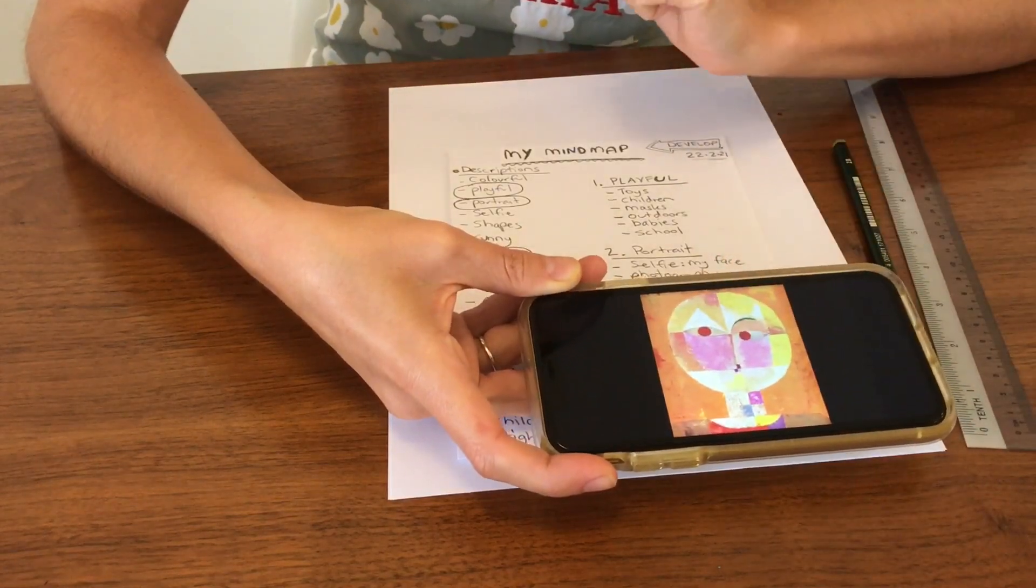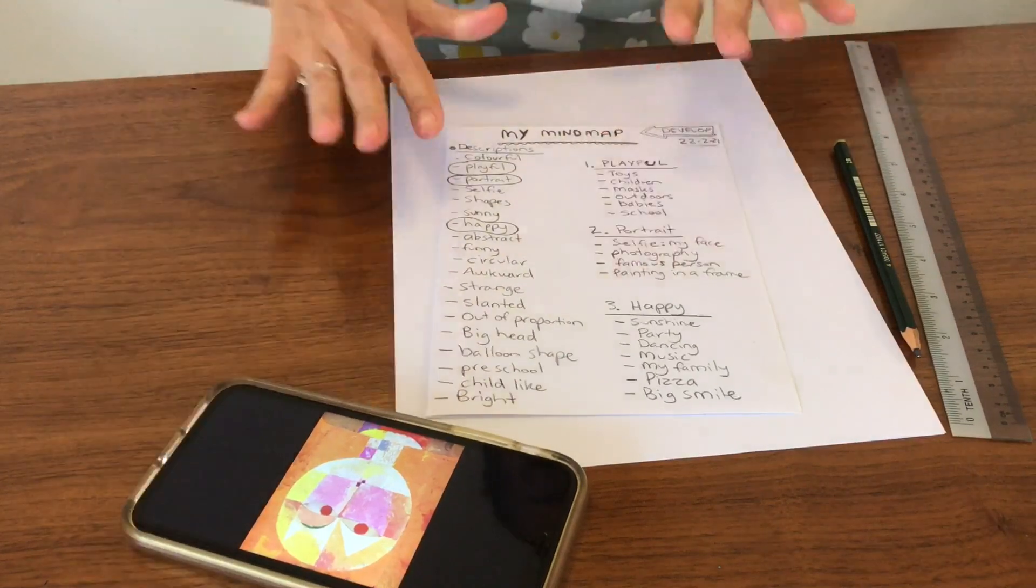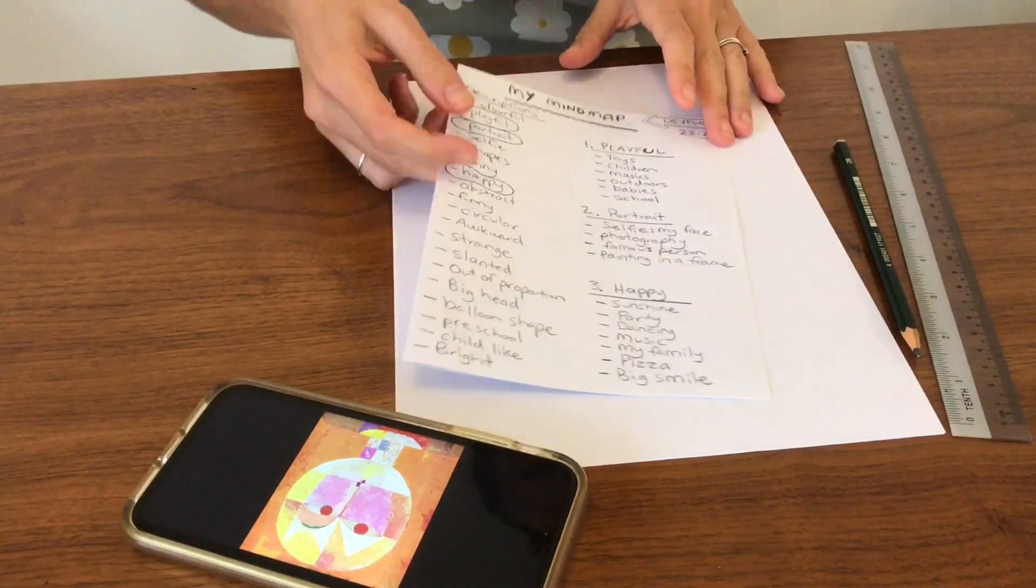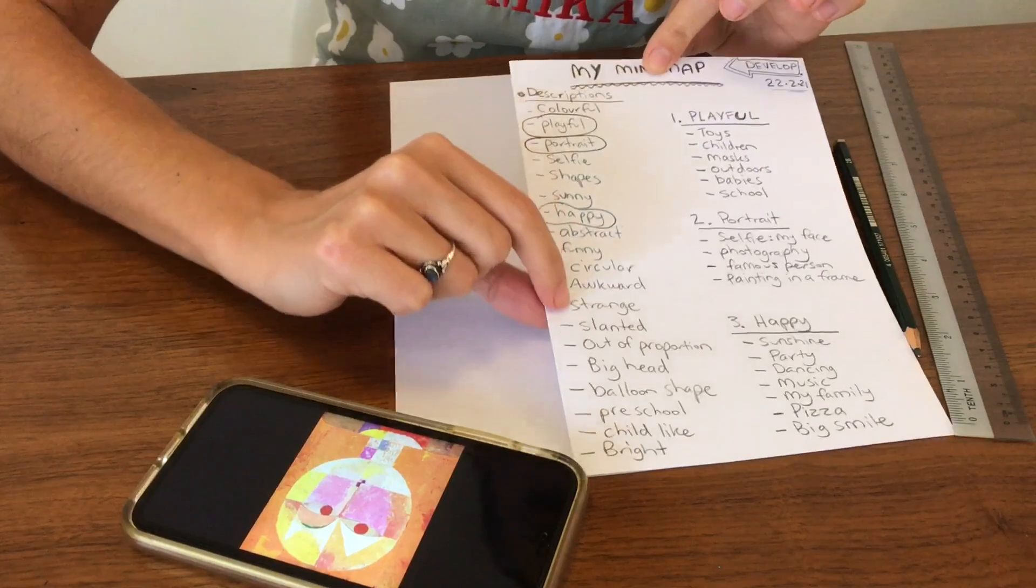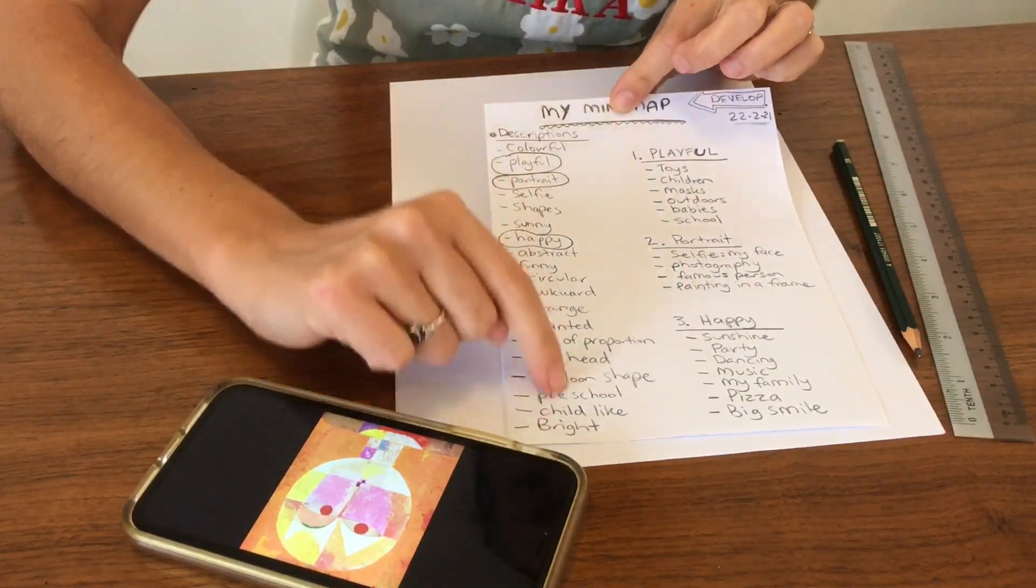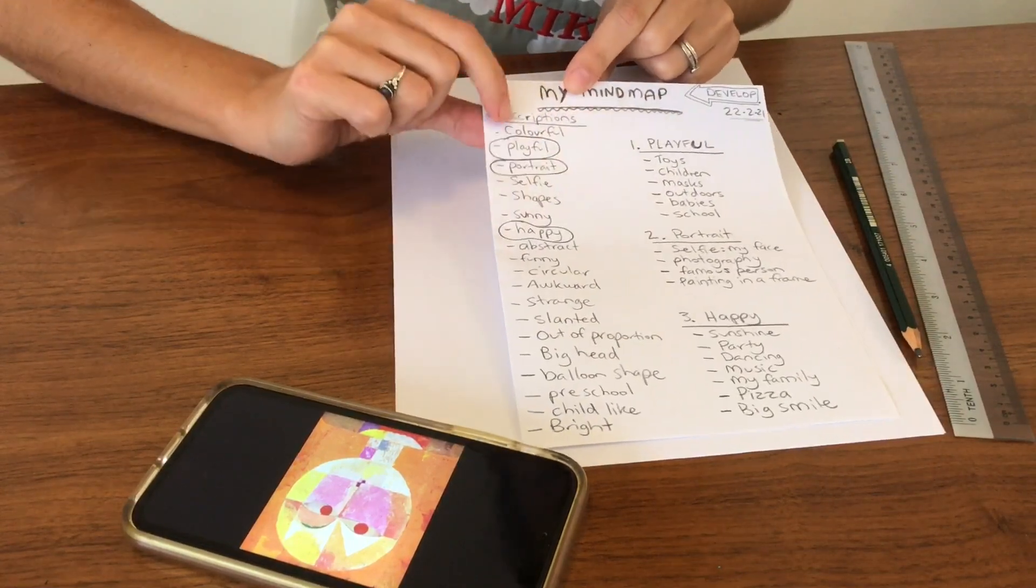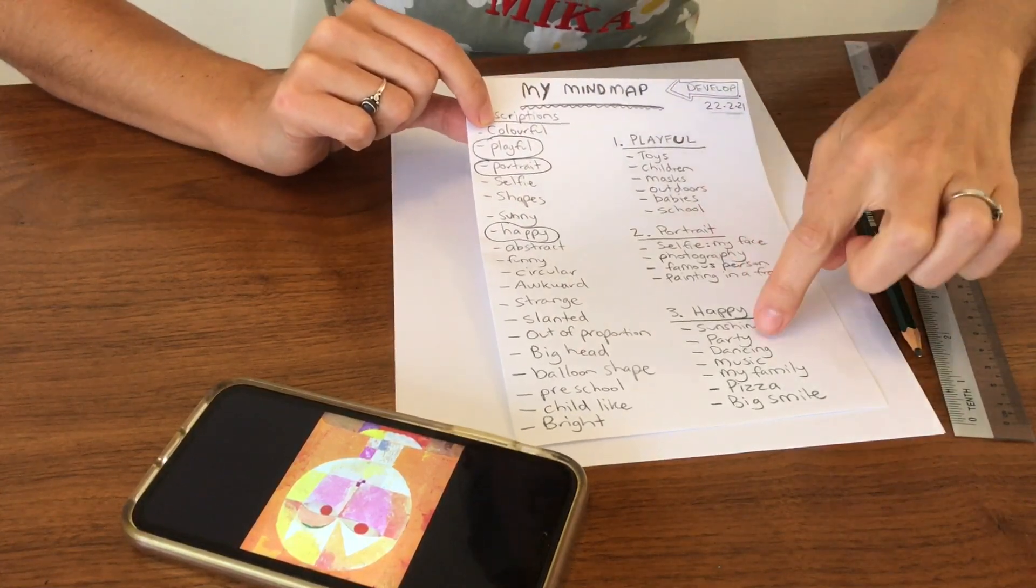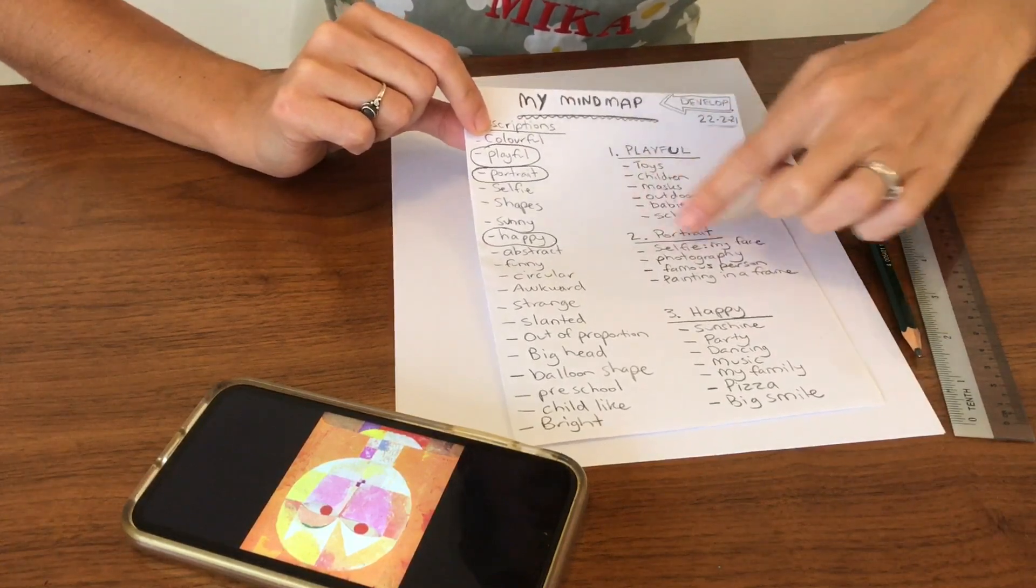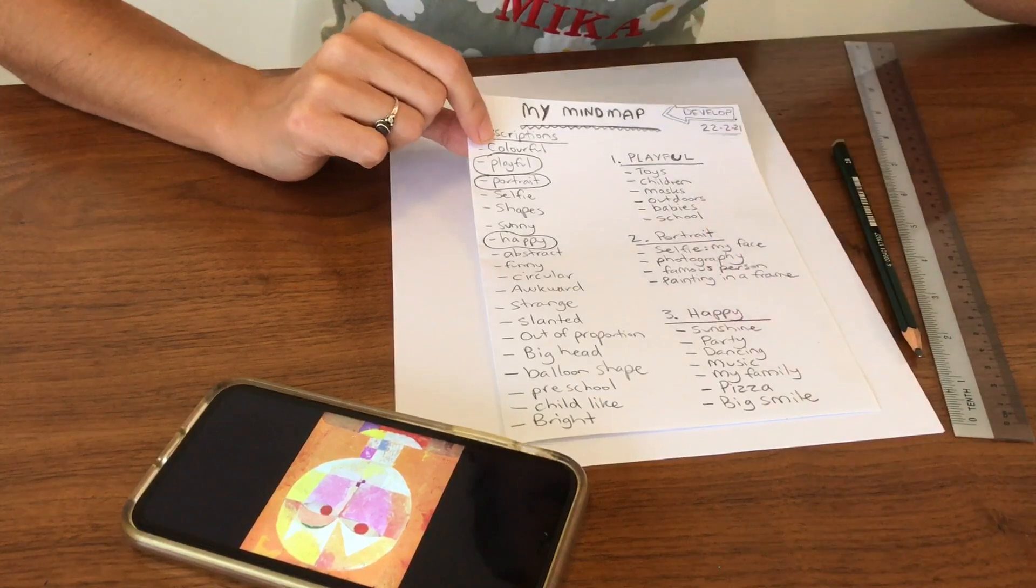I'm going to just have this artwork next to me because that will be really helpful as I think about this mind map. So I described this artwork. These were all my words. You described your artwork so you'll have your descriptions. Then I took three of those words and wrote them down and I came up with a list of things or objects that link to those describing words.